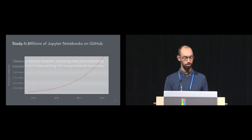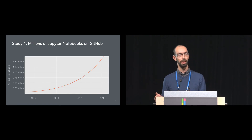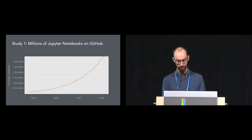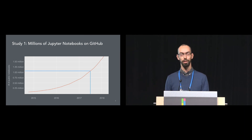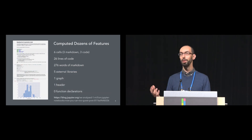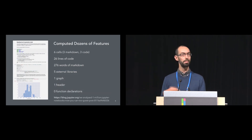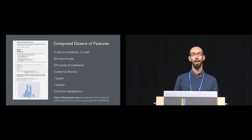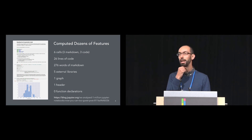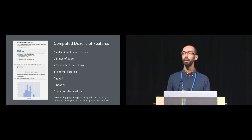For the first study, we looked at Jupyter notebooks on GitHub. There are now millions of these documents being shared publicly, and GitHub has made it very easy to share there — you can see exponential growth over the last couple of years. When we did our analysis, there were just over a million notebooks publicly available. We essentially searched for, scraped, and downloaded all of these. For each notebook, we computed features like number of cells, lines of code, words of text, and function declarations. We put a blog post on the Jupyter blog describing the work, linking to our analysis notebooks and the full dataset.